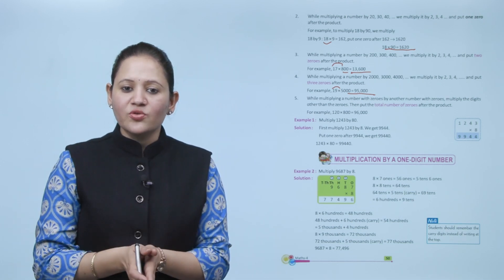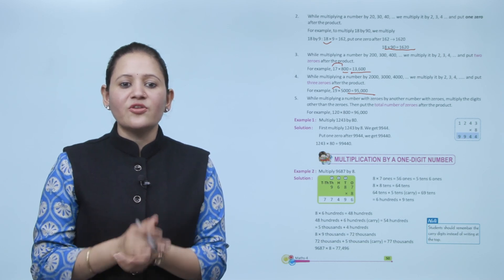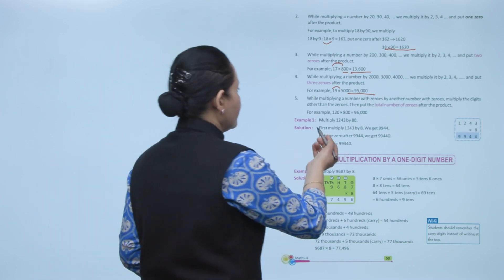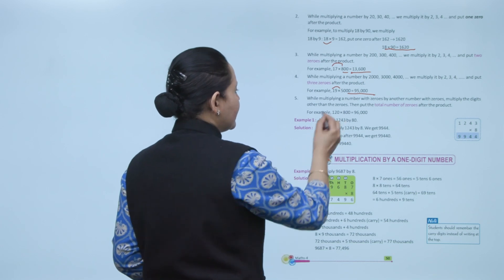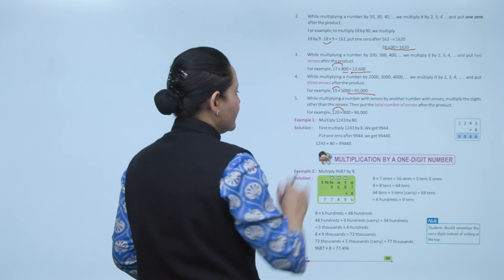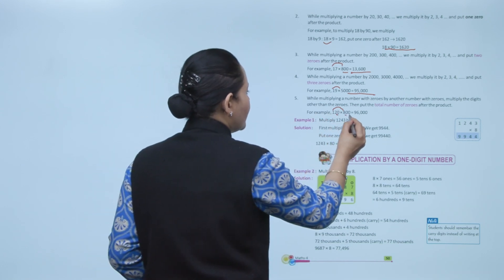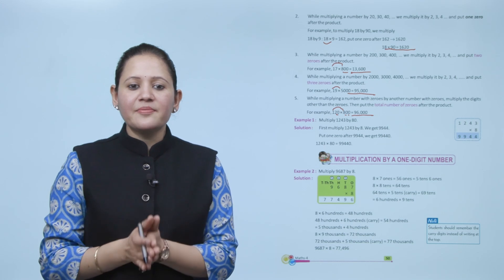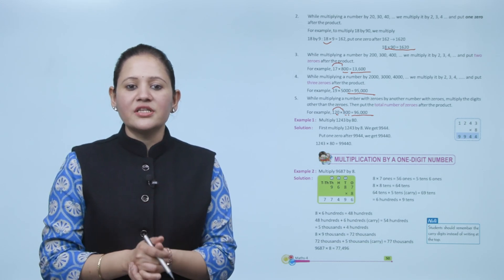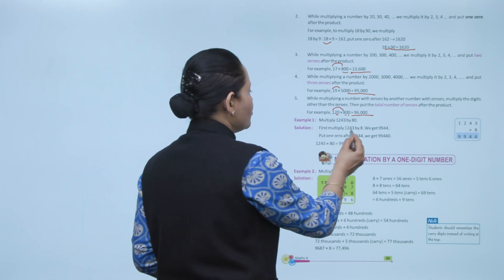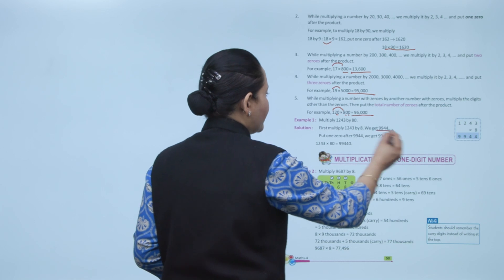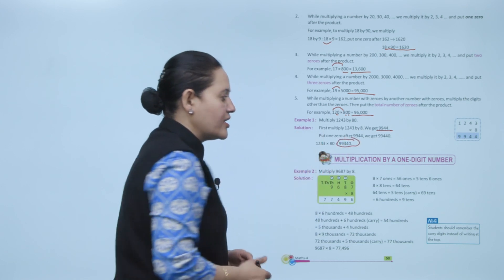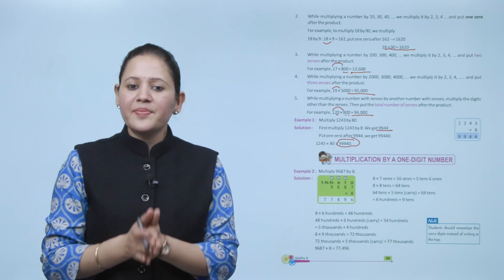When multiplying a number with zeros by another number with zeros, multiply the digits only, then count the total number of zeros and put them after the product. For example, 120 multiplied by 800: multiply 12 by 8 to get 96, then count 1 + 2 = 3 zeros total, so the answer is 96,000. Another example: multiply 123 by 80 — multiply the digits, get 984, put one zero, answer is 9,840.